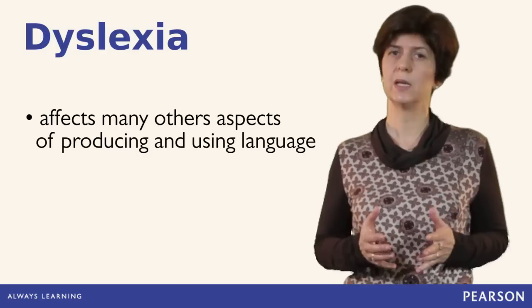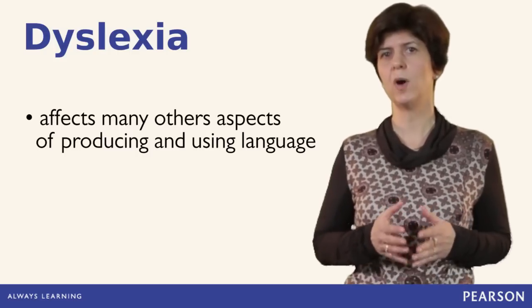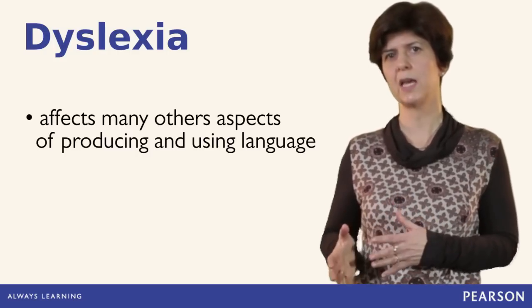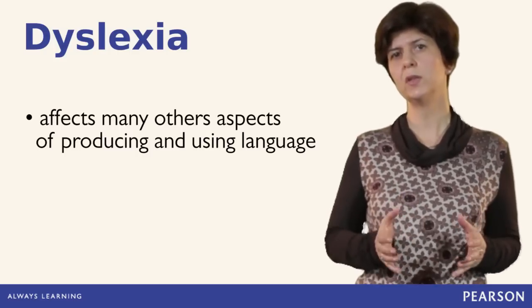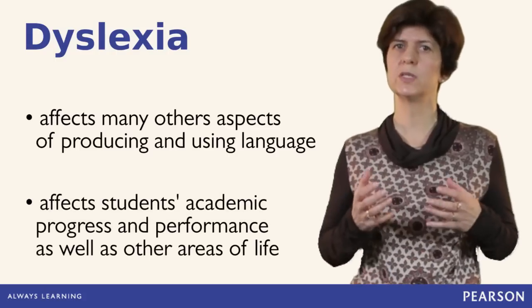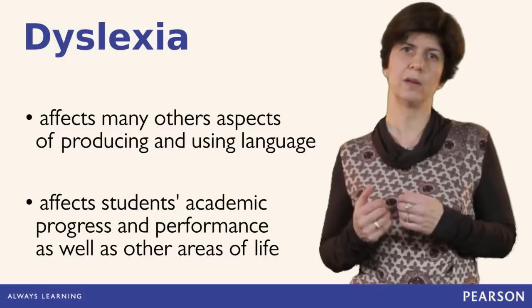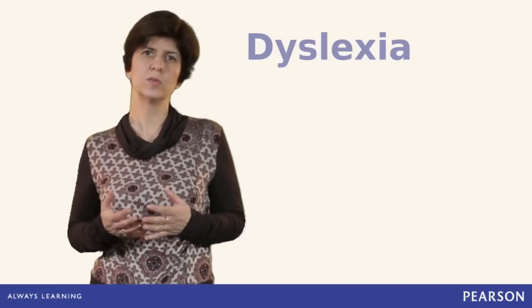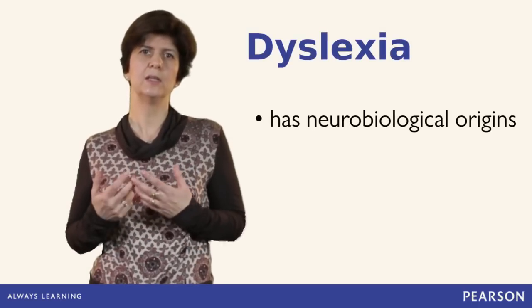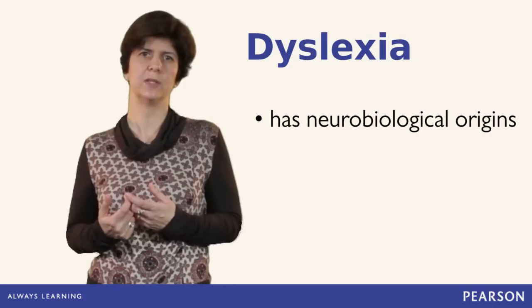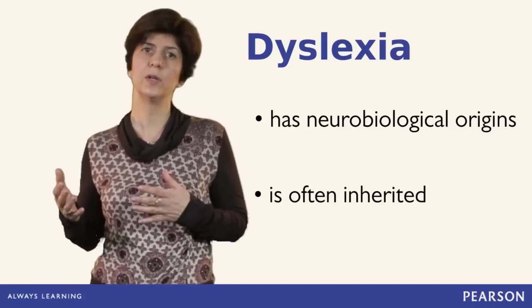It is easy to see that if dyslexia has such wide-ranging effects on various areas of language, it is going to influence not only students' academic progress and performance, but also other areas of life. What causes dyslexia? In other words, why are the hurdles there on the track in the first place? Most recent research suggests that there are neurobiological origins of dyslexia, and it is often inherited.